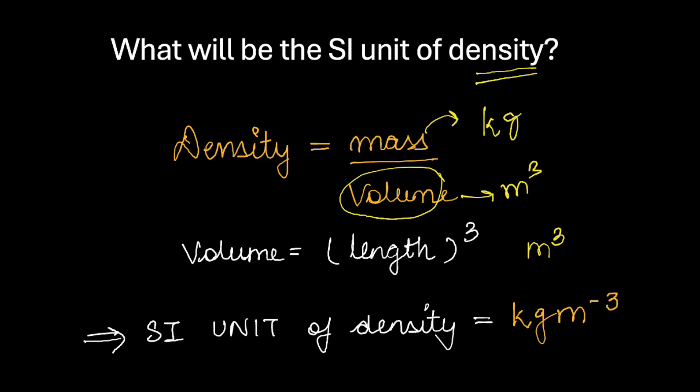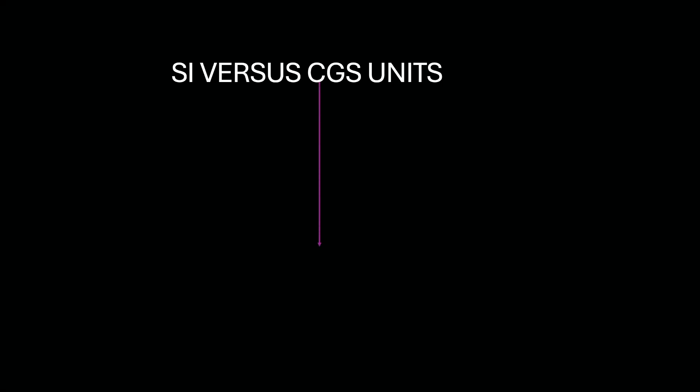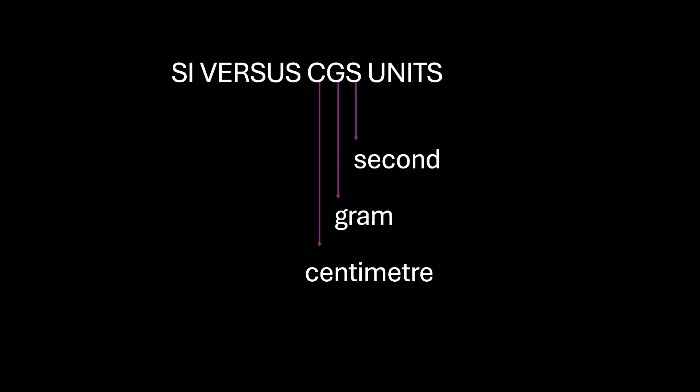There is also one interesting unit system that we should know — the CGS system. C stands for centimeter, G for gram, and S for second. This system was widely used before the SI system became the standard.